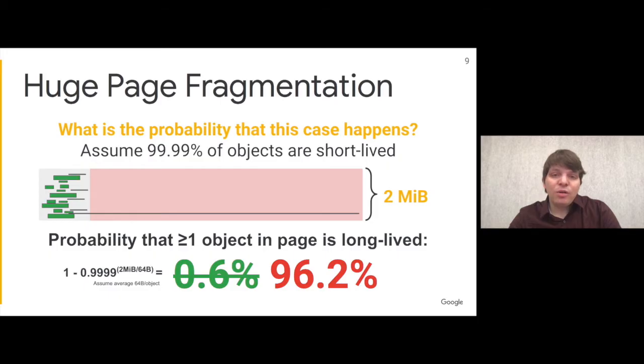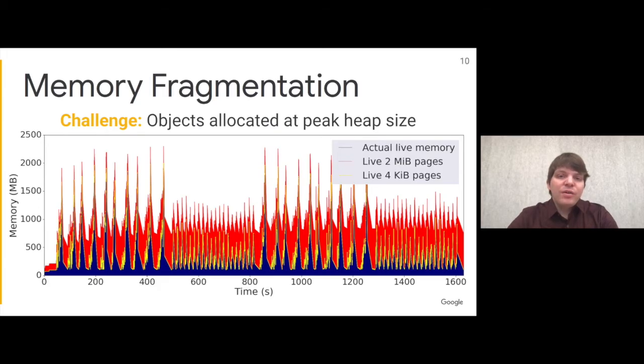This is not just a hypothetical problem. We collected a trace from a Google server workload with synthetic inputs that cause memory footprint to fluctuate. Fragmentation with 4-kilobyte pages shown in yellow is relatively low, but once you switch to 2-megabyte pages, fragmentation becomes a large fraction of the memory footprint and slowly increases over time due to long-lived objects allocated at peak memory footprint.